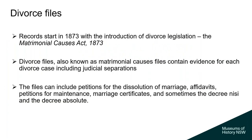Divorce files — our records start with the introduction of the Matrimonial Causes Act, which was introduced in 1873. Divorce Files can also be referred to as Matrimonial Causes Files and contain the evidence for each divorce case. Within the files are the judicial separations, and there may also be petitions for the dissolution of marriage and petitions for the maintenance of children, along with marriage certificates, letters, the decree nisi and the decree absolute. Please note that not all files will contain photos, although it is a bonus when they do.